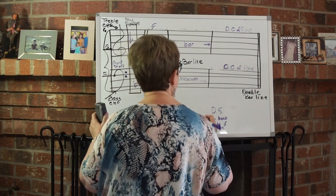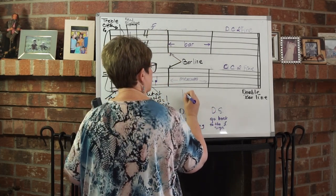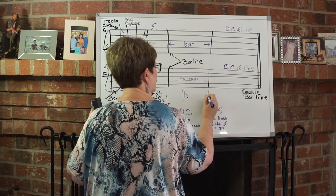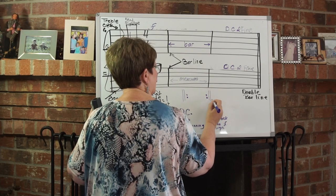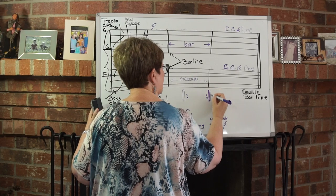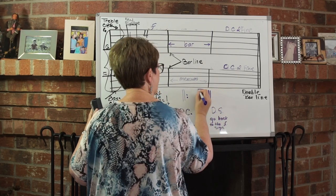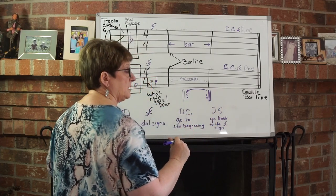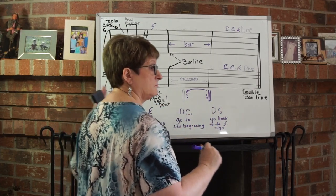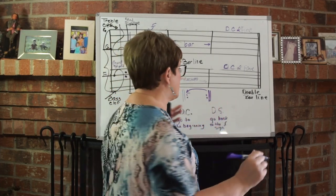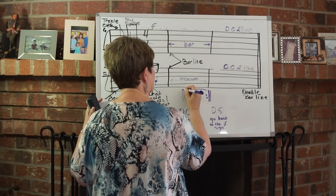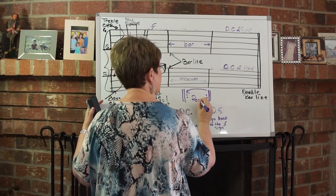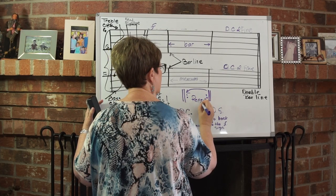There's one sign that we haven't talked about and that's the repeat sign. Remember it's a double bar line with two dots. You sing along and you come to this sign right here and it means go back and find its bookmark and sing that whole section again. It could be two measures. It could be the whole song. But you're going to look for this bookmark. There's almost always a bookmark. So this is our repeat sign.